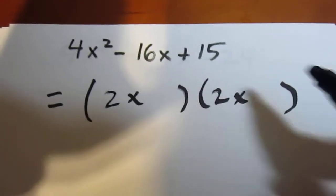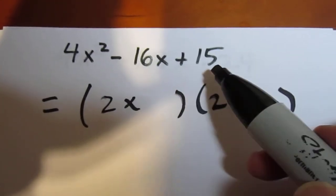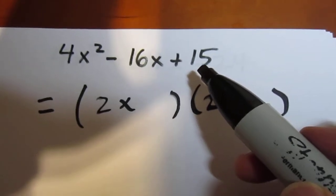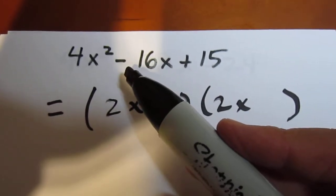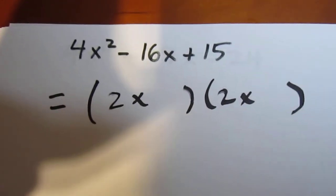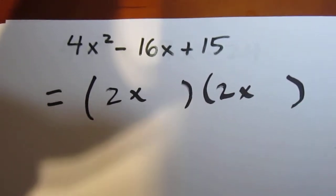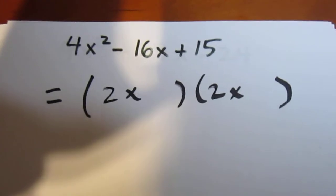And then, you know, I try to come up with 2 numbers that multiply to a positive 15. Naturally, I think of positive numbers first, but then I realize I'm going to have to have a negative middle term, which means I want to have 2 negative numbers. So, what 2 negative numbers multiply to positive 15?